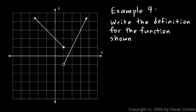One more example — write the definition for the function shown. The function is in two pieces, both lines, so we write f of x with curly braces. Working left to right, the critical value is x equals positive one. To the left of that, we can see a y-intercept of two and a slope of negative one, so the expression is negative x plus two, and that applies when x is less than or equal to one — a closed circle is shown there.